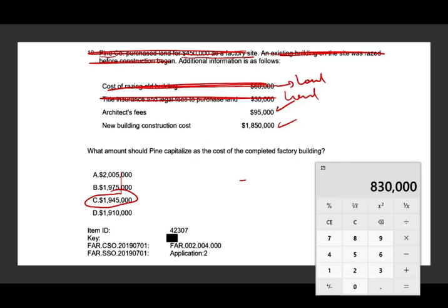I teach financial accounting, which is an introductory accounting course, and these are the types of questions I put on my exams. The CPA exam questions are not difficult, but you have to cover a lot of territory. With a good basic understanding, you should be in good shape. This is a very introductory property, plant, and equipment example. If you want more, go to my intermediate accounting chapter 10 on property, plant, and equipment — what's included and what's not included.